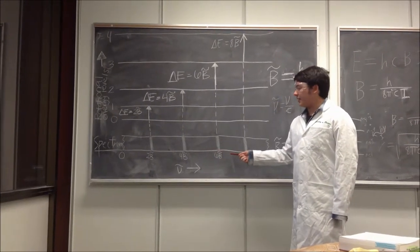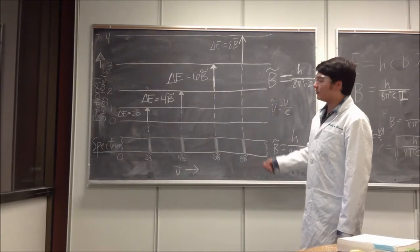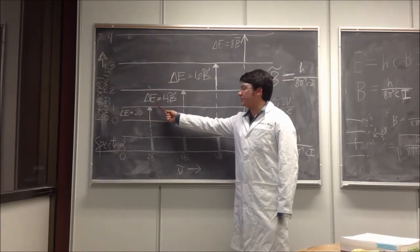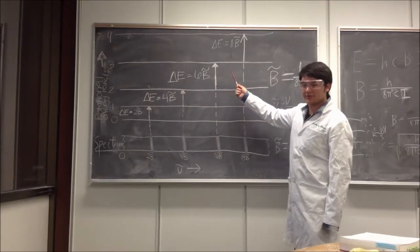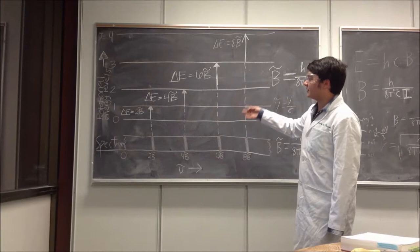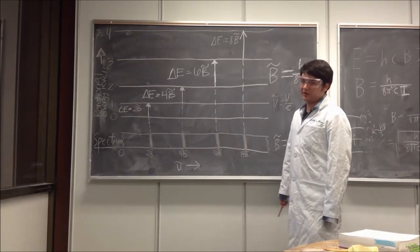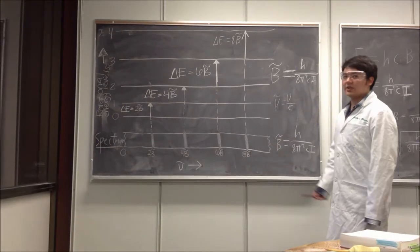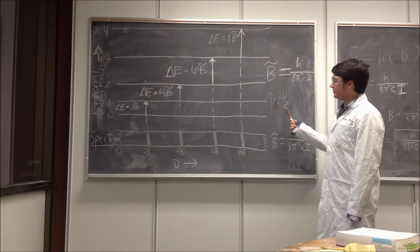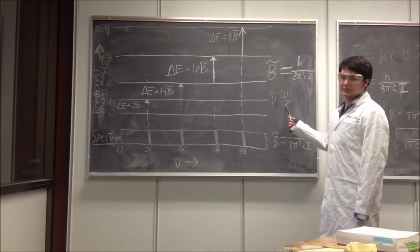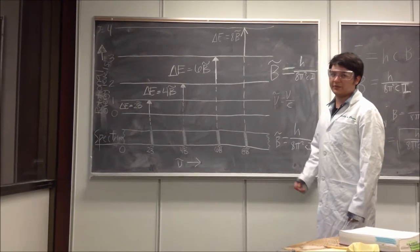As the wave number value increases on the spectrum, what we observe is that the energy differences increase. The rotational energy difference increases as the wave number is at higher values. Note that wave number is essentially frequency divided by the speed of light, and it is also inverse wavelength.